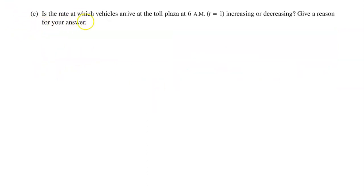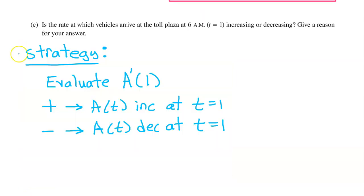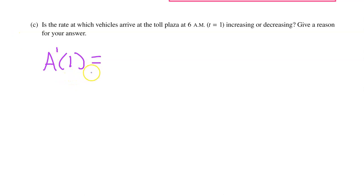Part C: Is the rate at which vehicles arrive at the toll plaza at 6 a.m., t equals 1, increasing or decreasing? Give a reason for your answer. Looking at the graphical relationship between F, F prime, and F double prime, we see that A will be increasing when A prime is positive, and A will be decreasing when A prime is negative. So our strategy will be to evaluate A prime at 1. A positive tells us that A is increasing at t equals 1, and a negative tells us that A is decreasing at t equals 1. This problem is calculator active, so let's use our graphing calculator to evaluate A prime at 1.